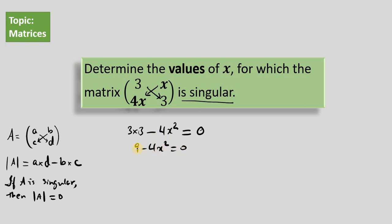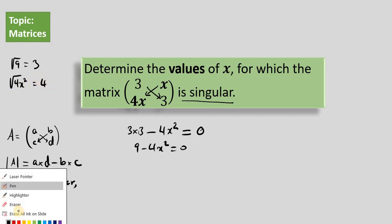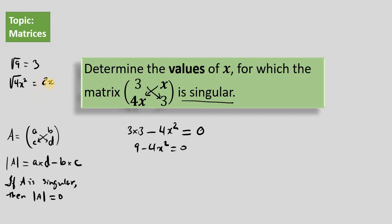How do we solve this quadratic equation? We notice about this particular quadratic equation that it's actually the difference of two squares, because 9 is a square number, 4 is a square number, and 4 is attached to x squared. The square root of 9 is 3, and the square root of 4x squared is actually 2x, because if we were to multiply 2x by 2x, we'd get 4x squared. So these two are square numbers, and we're subtracting two square numbers — that's the difference of two squares.